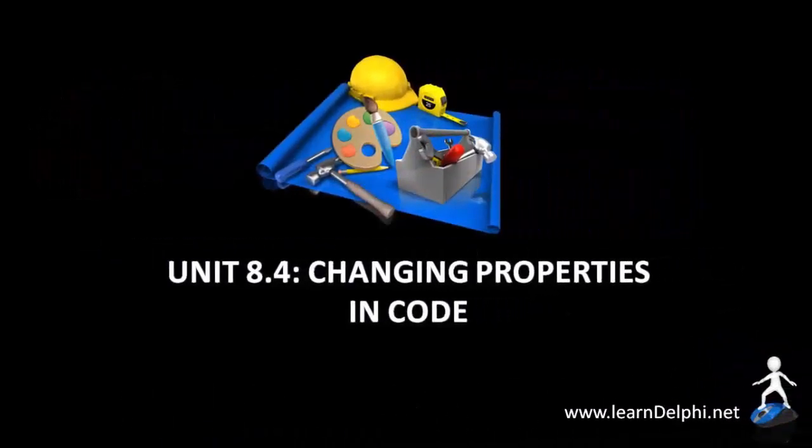In the previous two videos I demonstrated how to write code for the default and additional events of a Delphi object. We have done some programming, but I asked you not to worry too much if the code you've written doesn't make total sense yet. In this video we will look at those statements again and I will try to unpack the different concepts for you.